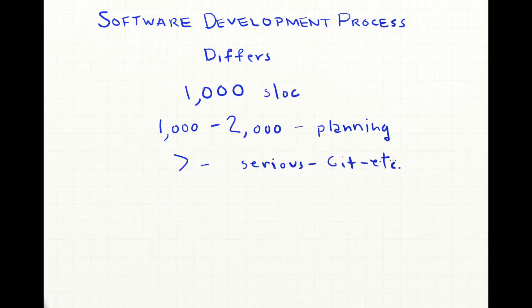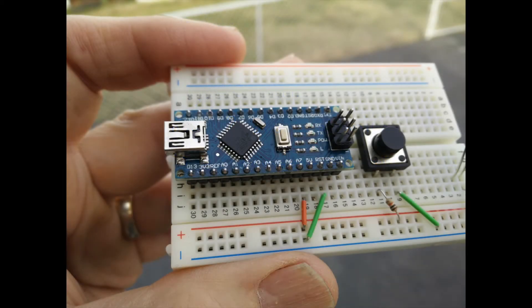Working with teams makes it even more important to really plan how we're developing the code and where we're saving things. Here's an Arduino, a little controller board we're using in CS110. In that class, people are writing maybe 50 to 75 lines of code per project, so nothing we really have to plan out. It's just trying to understand the basics — pretty easy to do.